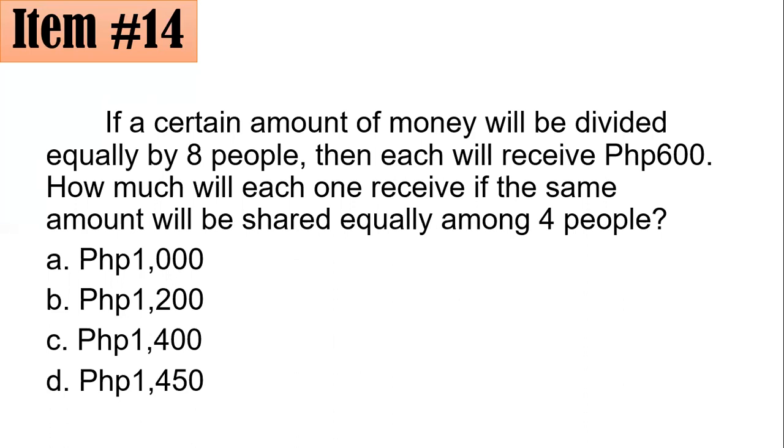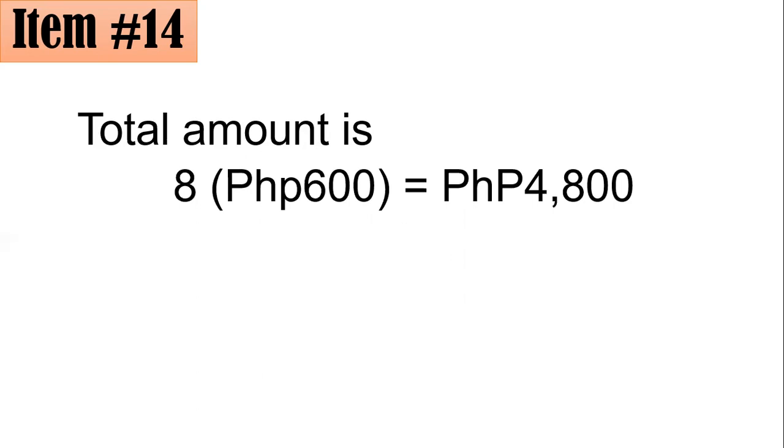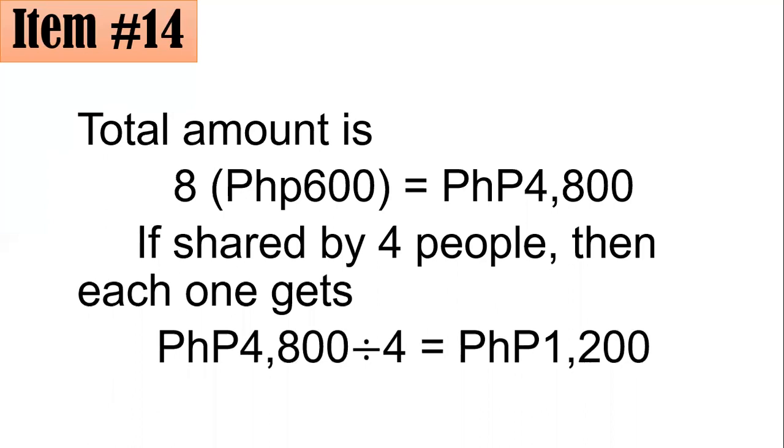If there are 8 people and each will receive 600 pesos, the total amount is 8 times 600 pesos, which is 4,800 pesos. This is the total amount that was divided equally among 8 persons. Since the total amount is 4,800 pesos, and there are 4 people who will share this amount, then 4,800 pesos divided by 4 means each one will get 1,200 pesos. That is letter B.